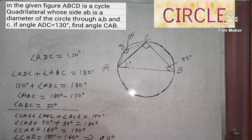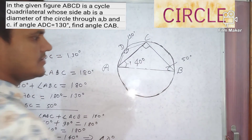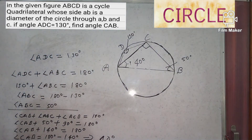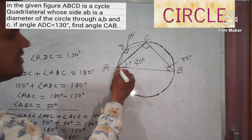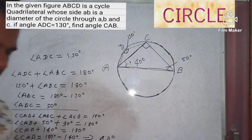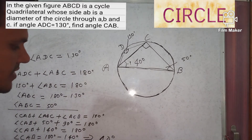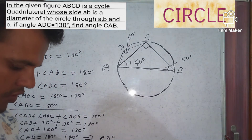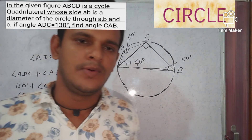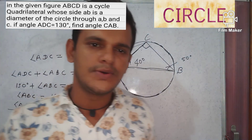So our answer is 40 degrees. Angle CAB is equal to 40 degrees. AB is a diameter, and we found angle CAB equals 40 degrees. So 40 degrees is the answer to this question — option A is the correct answer. Now let's move to question number 2.